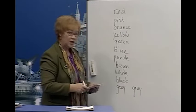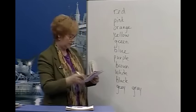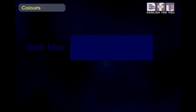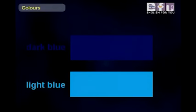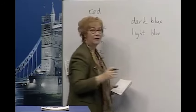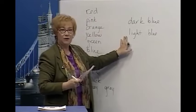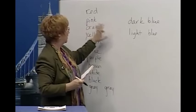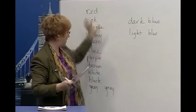Now, we can also talk about dark and light colors. We can say dark blue, for example. Dark blue. Or we can say light blue. Light blue. Dark blue, light blue. Dark pink, light pink. So we can use these words to describe different shades of color for any of these colors.